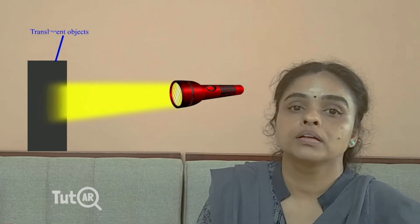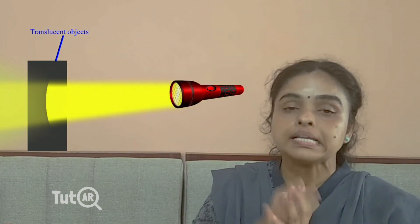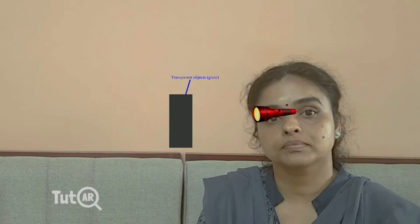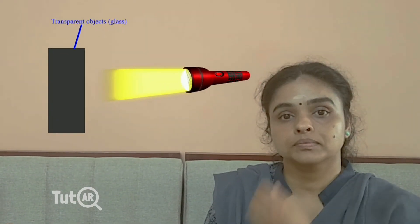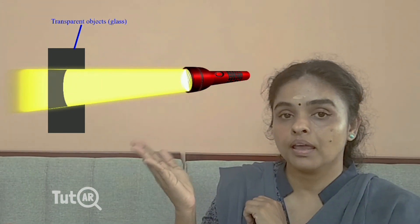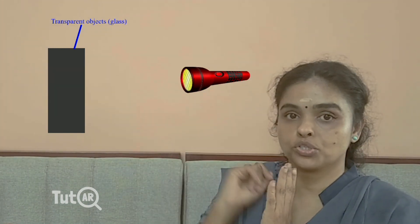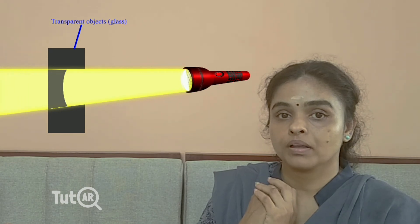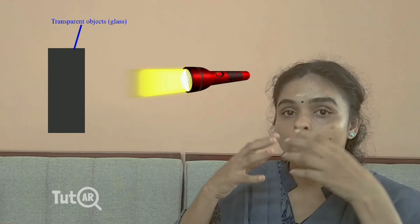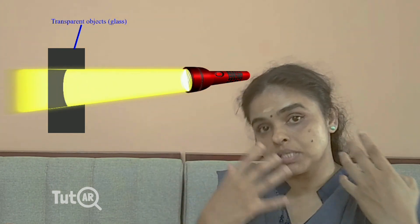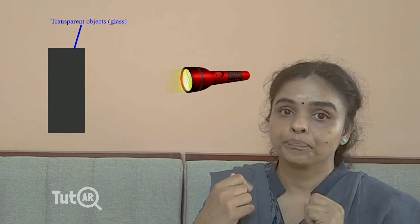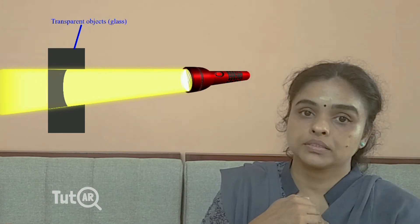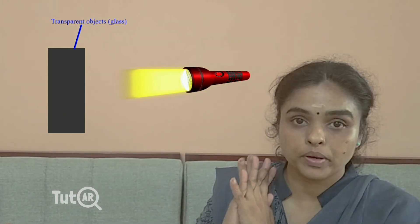The third type is transparent objects. Let us see how transparent objects pass light through them. Here you can see a plain glass and a torch. Observe the passage of light — the light completely passes through the glass. Such materials are known as transparent objects.